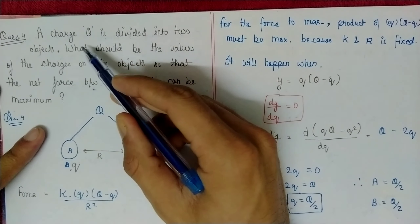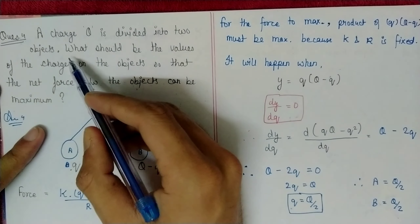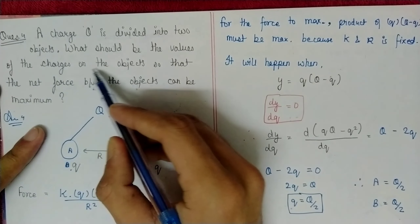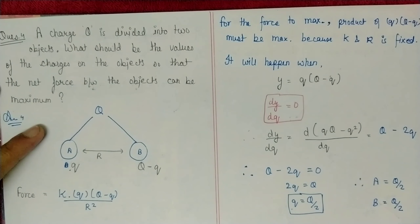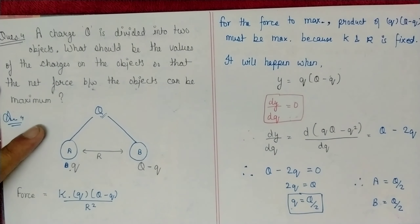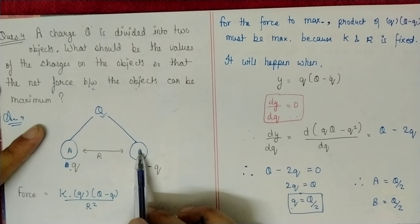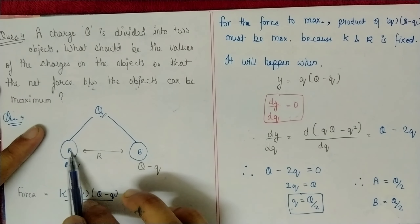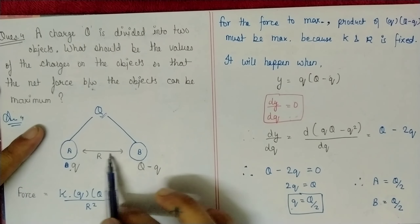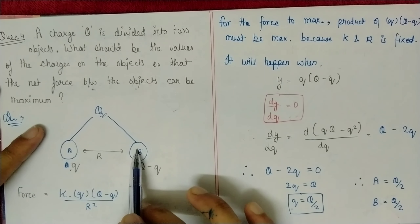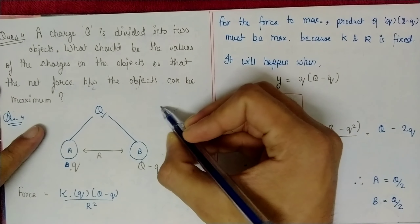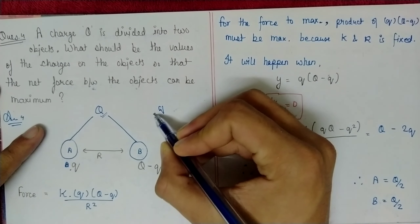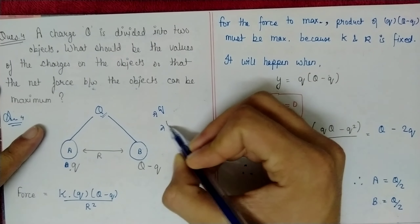Question 4: A charge Q is divided into two objects. What should be the values of the charges on the objects so that the net force between them is maximum? Let one object carry charge q; the other carries (Q − q). Their separation is r. Applying Coulomb's law: F = k·q·(Q−q)/r².